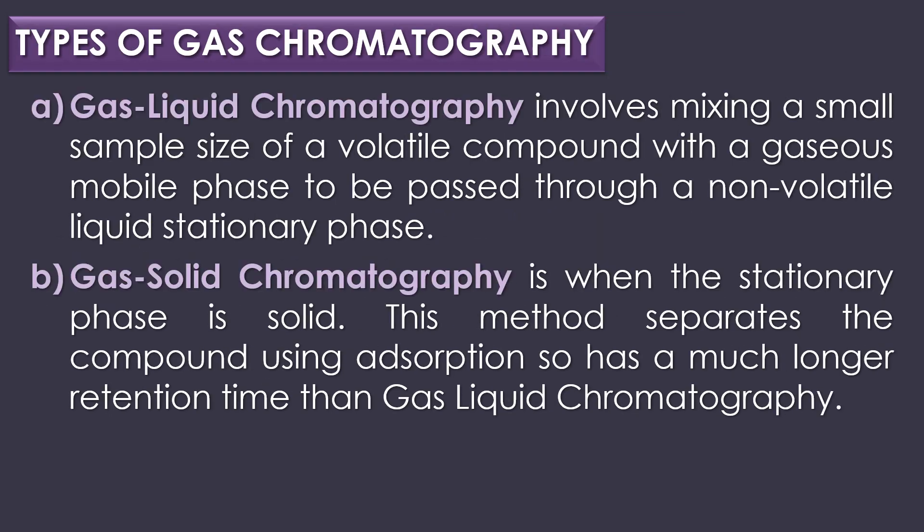There are two main types of gas chromatography. The first type is gas-liquid chromatography, which involves mixing a small sample of a volatile compound with a gaseous mobile phase to be passed through a non-volatile liquid stationary phase. The second type is gas-solid chromatography, where the stationary phase is solid; this method separates compounds using adsorption and has a much longer retention time than gas-liquid chromatography.